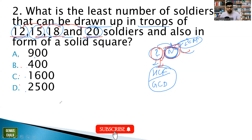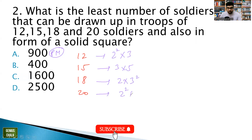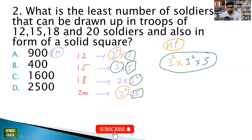Let's find the LCM of 12, 15, 18, 20 using prime factorization. 12 = 2²×3, 15 = 3×5, 18 = 2×3², 20 = 2²×5. For LCM, take the highest power of all respective prime factors: highest power of 2 is 2², highest power of 3 is 3², highest power of 5 is 5. So LCM = 2²×3²×5.